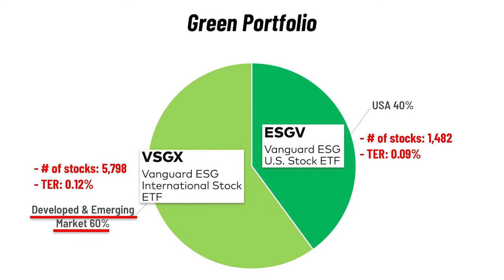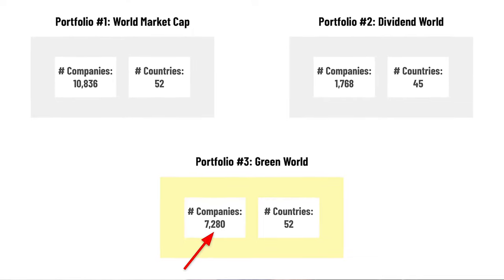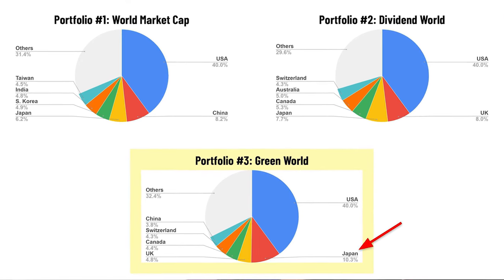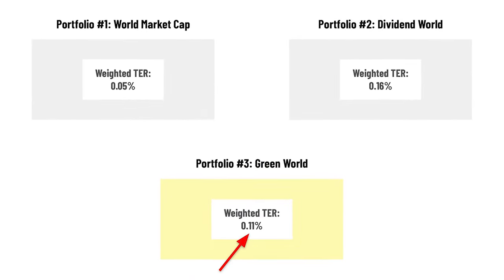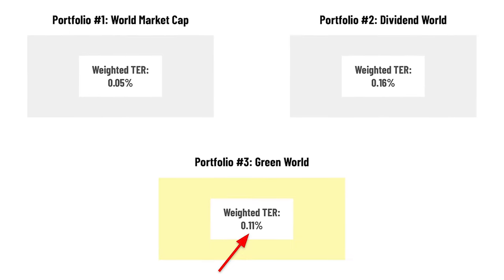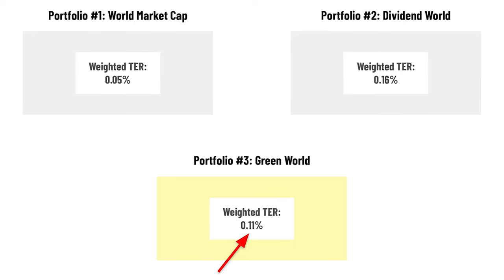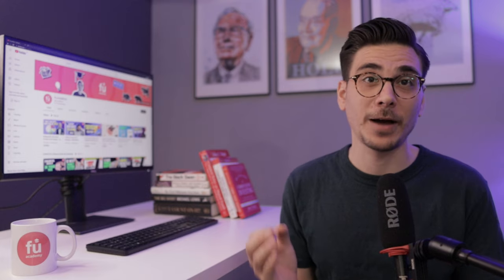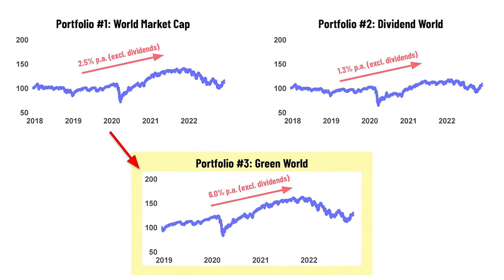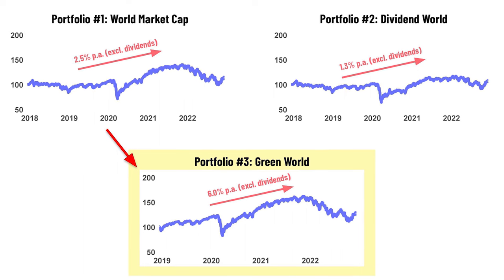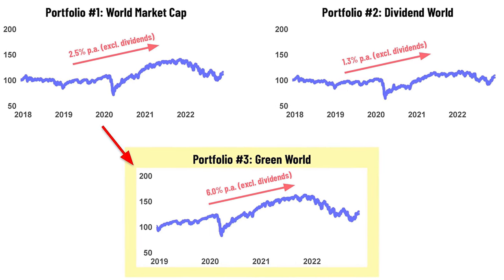Investing 40% in ESGV and 60% in VSGX gives you 7,200 companies from 52 countries, with 40% in the US, 10% in Japan, and 4% in the UK. The weighted expense ratio is 0.11% — higher than the first portfolio due to the ESG filter, but much cheaper than the dividend portfolio. Most ESG ETFs are young, so we don't have full 5-year performance data, but over the last 4 years that portfolio returned 6% per year — the highest so far, though it excludes most of 2018, which was a poor year for stocks.